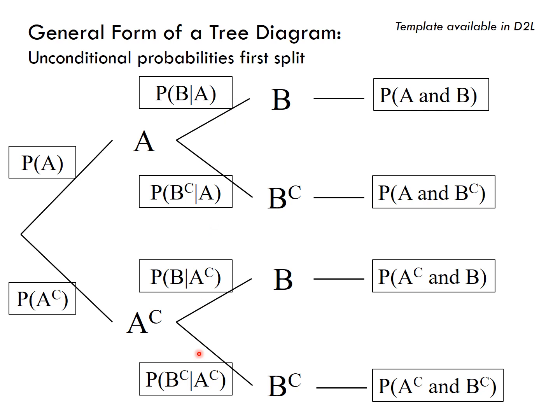The second set of branches are the conditional probabilities and their complements that you were given in the problem.